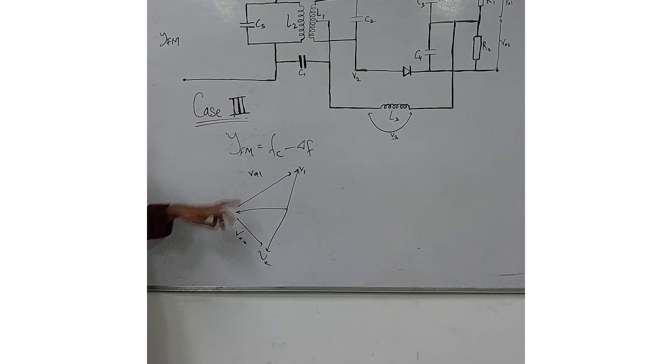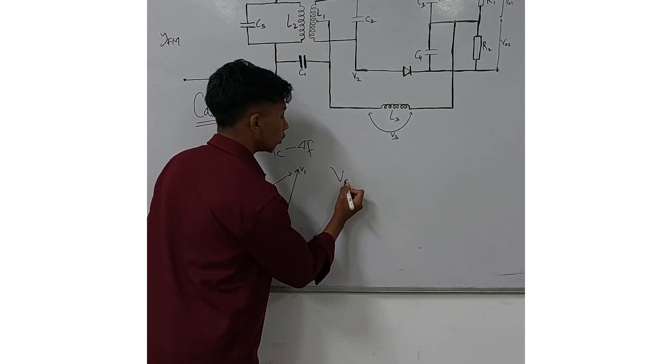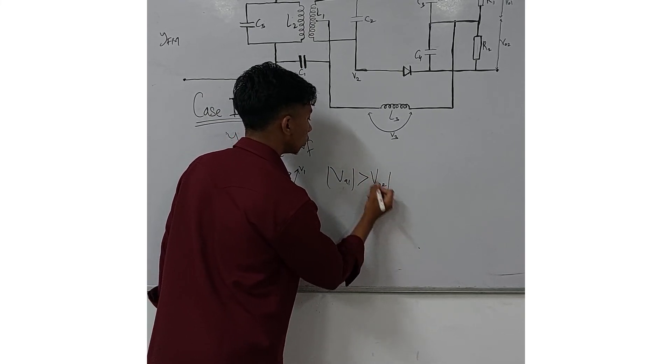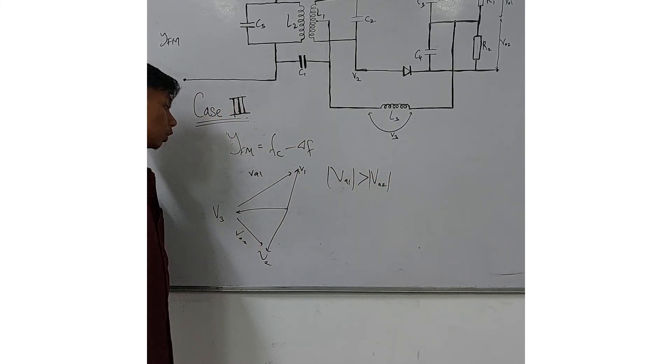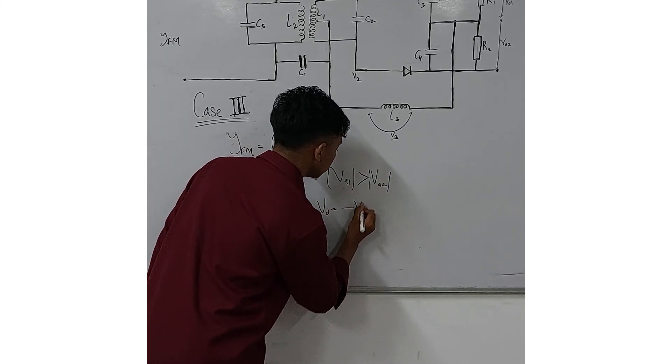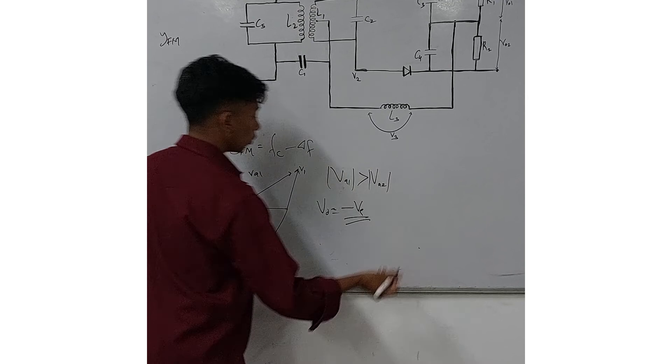Now we can see that the length of VA1 is longer than the length of VA2, meaning the magnitude of VA1 will be greater than the magnitude of VA2. Hence, using the output formula, we can see that the output will be a negative voltage.